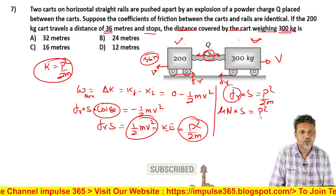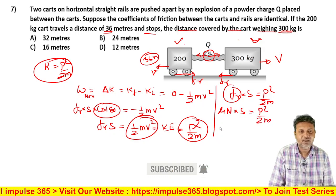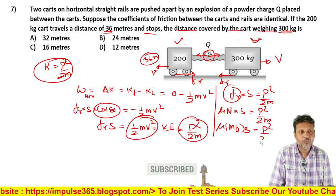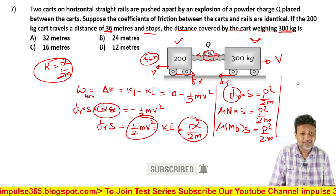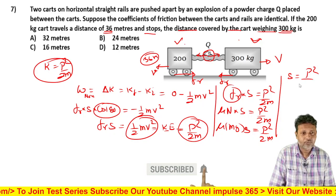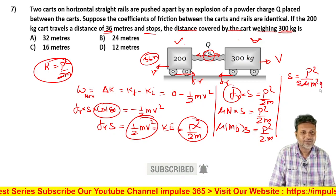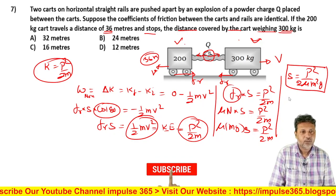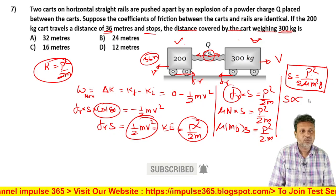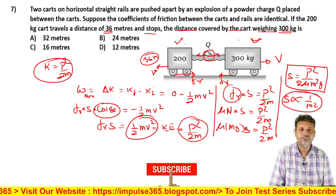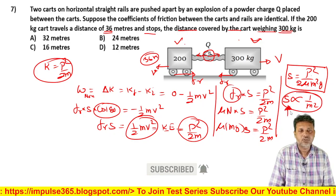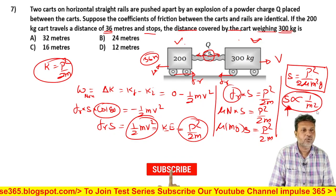Kinetic energy is equal to p squared upon 2m. The friction force equals μmg. Displacement equals p squared upon 2μm²g. Displacement is inversely proportional to mass squared. Stopping distance is proportional to 1 upon mass squared.